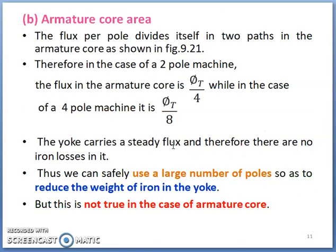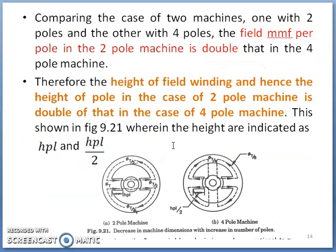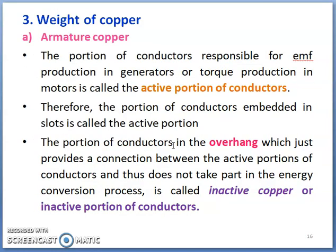Now let us move on to the third parameter, that is weight of copper. Here we are going to study the effect of choice of number of poles on weight of copper required for the armature as well as the field section. Before discussing how there is a change in volume of copper required, let us first understand the meaning of active copper and inactive portion of conductors.